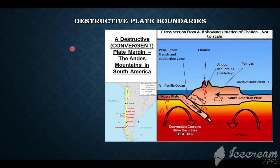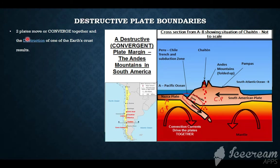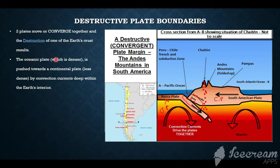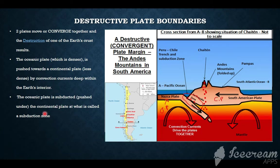Now let's talk about the destructive plate boundary. With the destructive plate boundary, two plates converge together and the destruction of one of the crusts results. The oceanic plate, which is denser, is pushed towards the continental plate by convection currents deep within the Earth's interior. Oceanic plates are subducted or pushed under the continental plates at what is called a subduction zone. On this diagram, we have an oceanic plate known as the Nazca plate near South America.